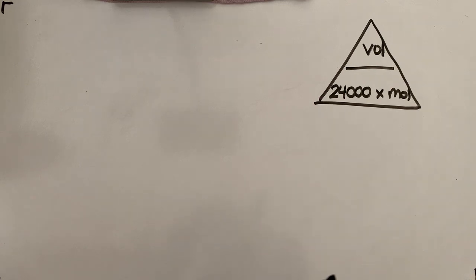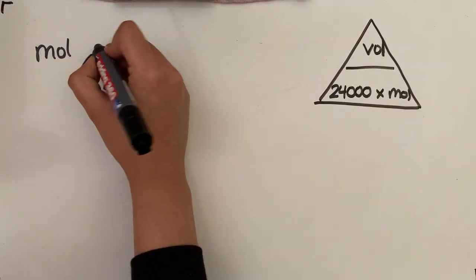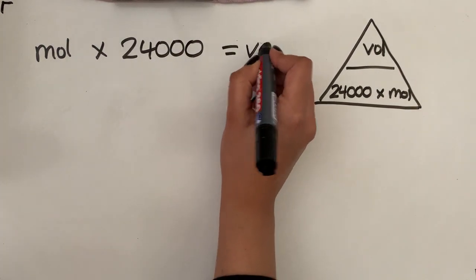So if we now apply that to exercise eight, question number one, we've got one mole of carbon dioxide. So if we apply that, if we want to work out the volume, the volume is always going to be the moles times 24,000. And that's going to give us our volume.